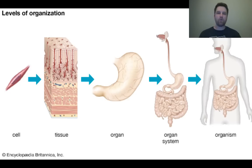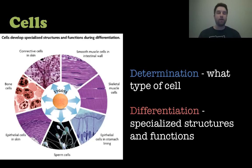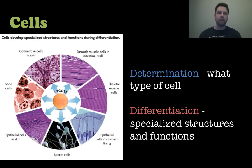We have cell, tissue, organ, organ system, and organism. Looking at these in a little more detail, we start with cells. When a sperm and egg meet, you create a zygote, and these zygotes are full of stem cells that can become any type of cell they choose. That depends on a couple of processes. One is called determination, which is when that cell figures out what type of cell it's going to be — muscle cell, nerve cell, etc. And then differentiation, when that cell specializes in its structure and function.